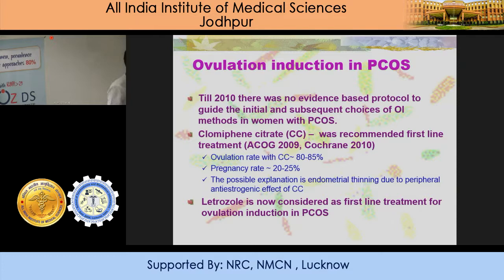The problem of ovulation induction with clomiphene citrate (CC) is that the ovulation rate is fantastic — 80 to 85 percent — but the pregnancy rate is only 25 percent. Because of this anti-estrogenic effect, there can be a thin endometrium. Numerous articles show that the receptivity of the endometrium concerns not only endometrial thickness but also blood flow.